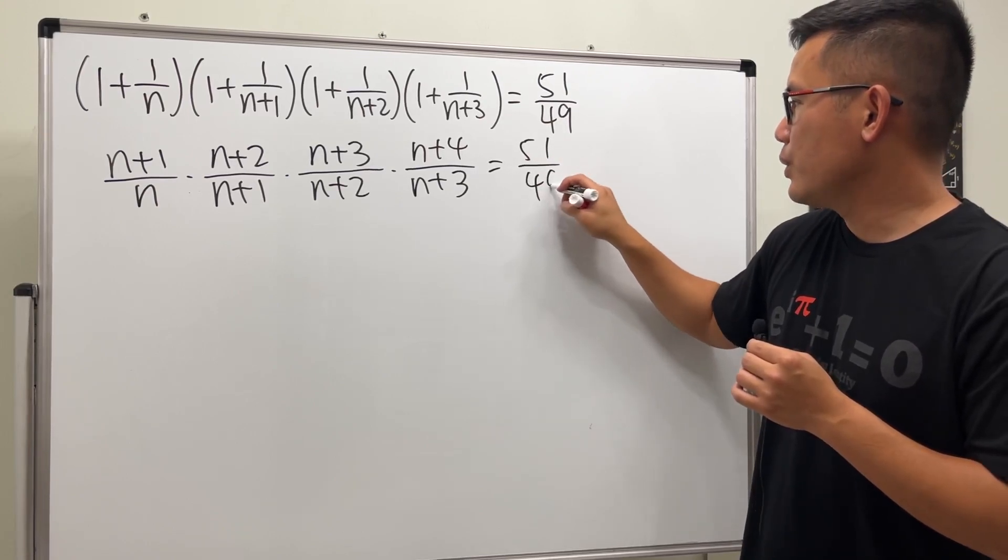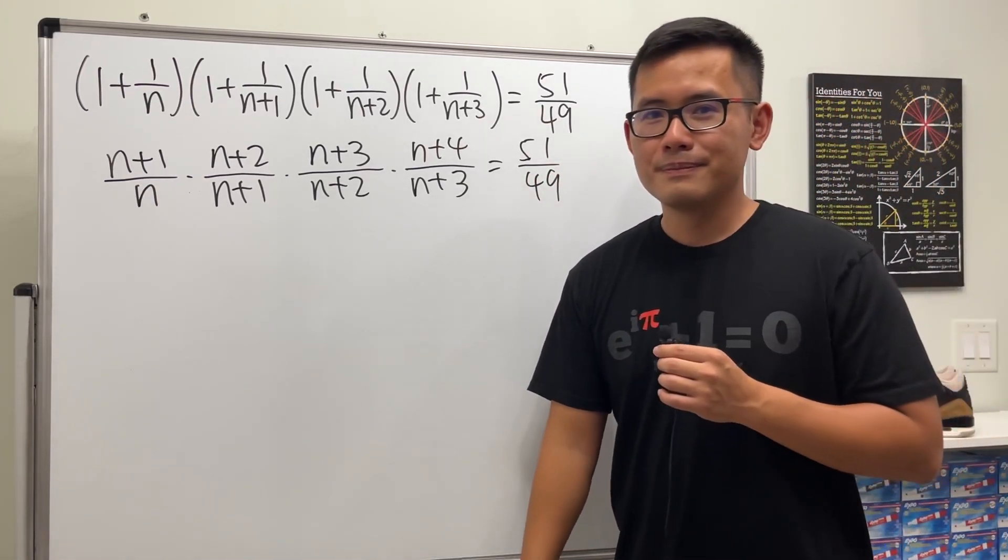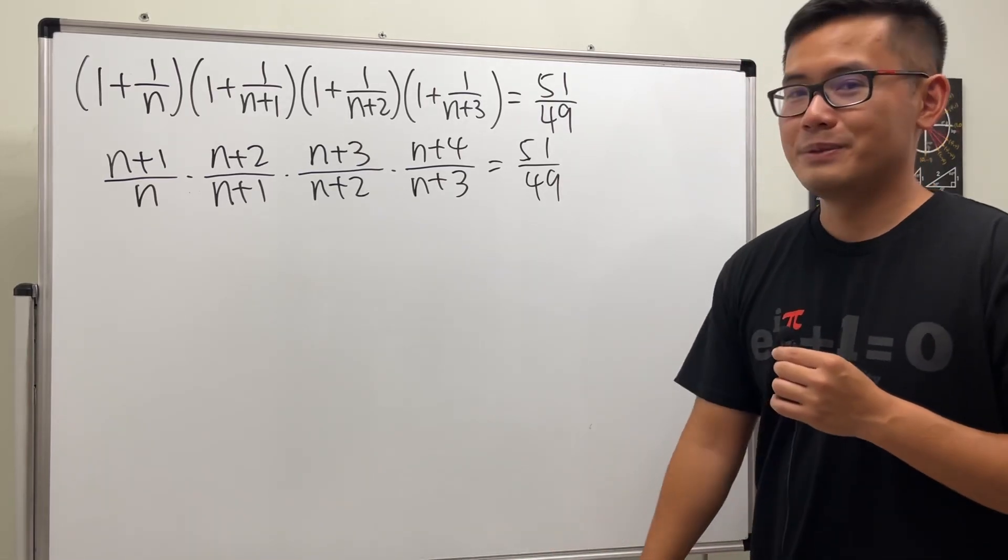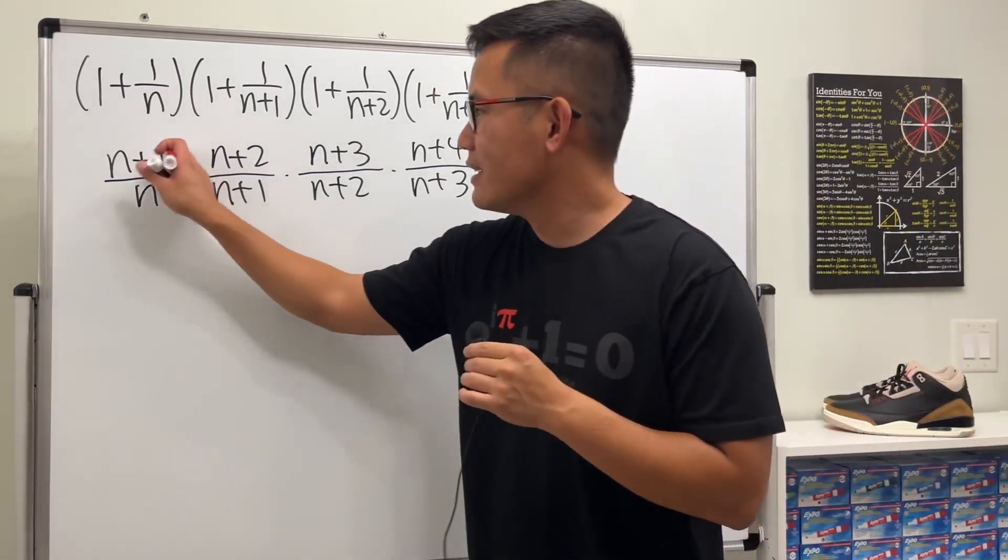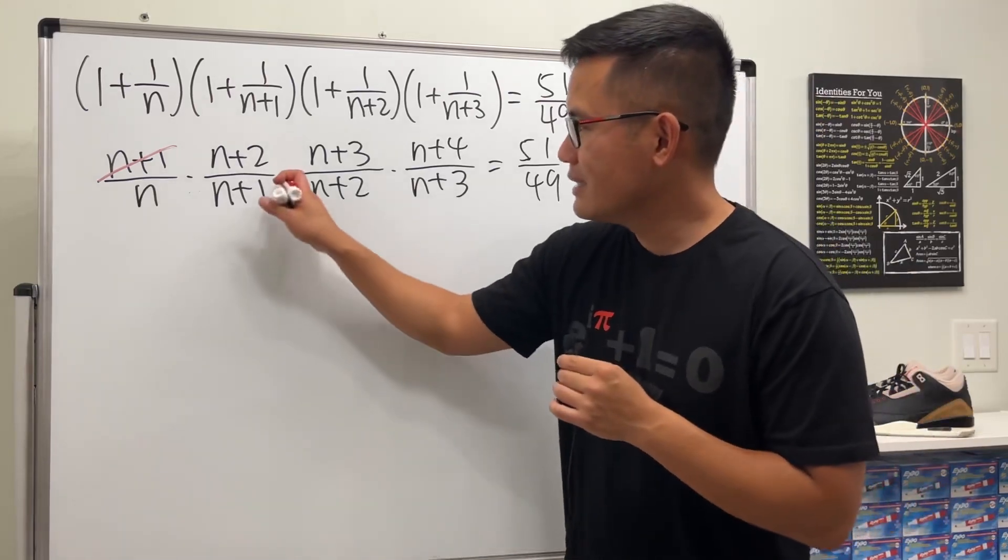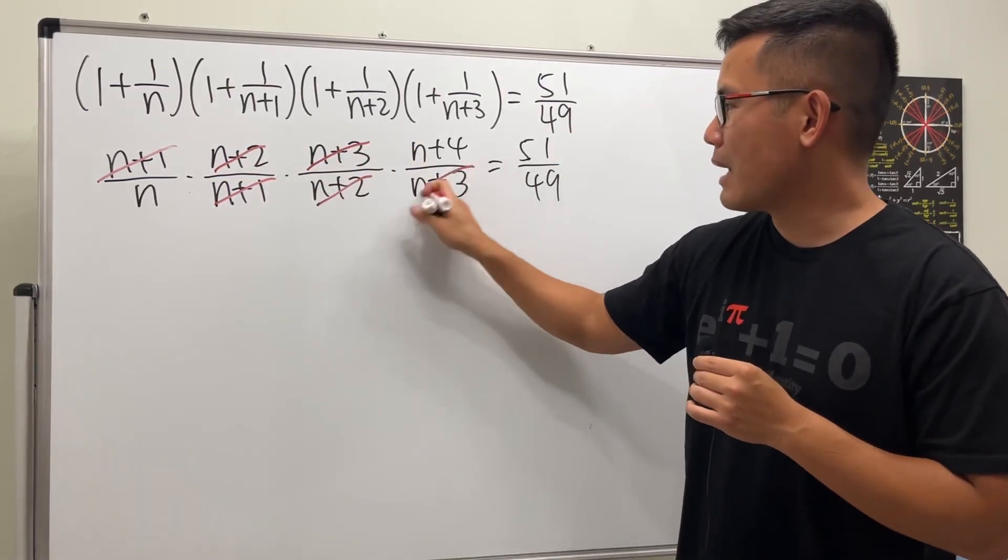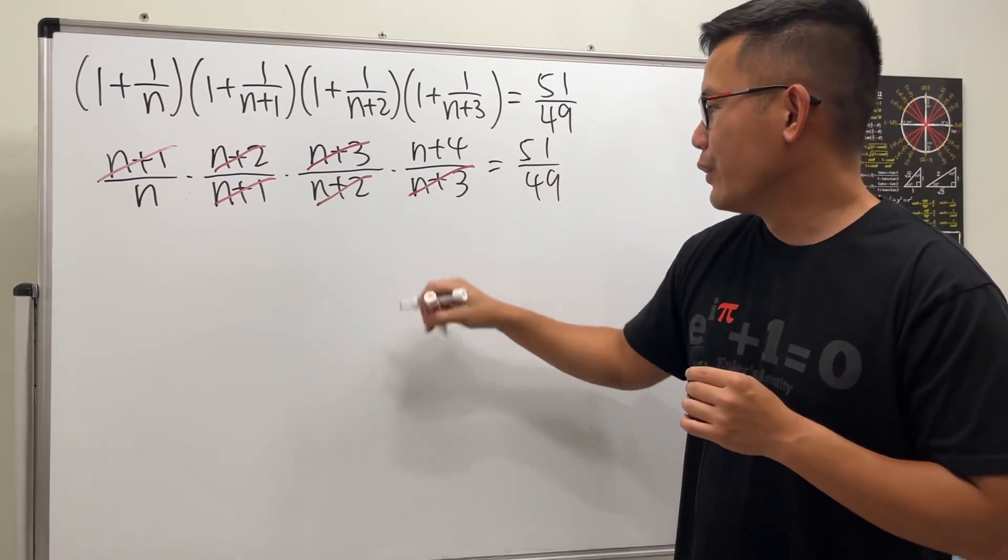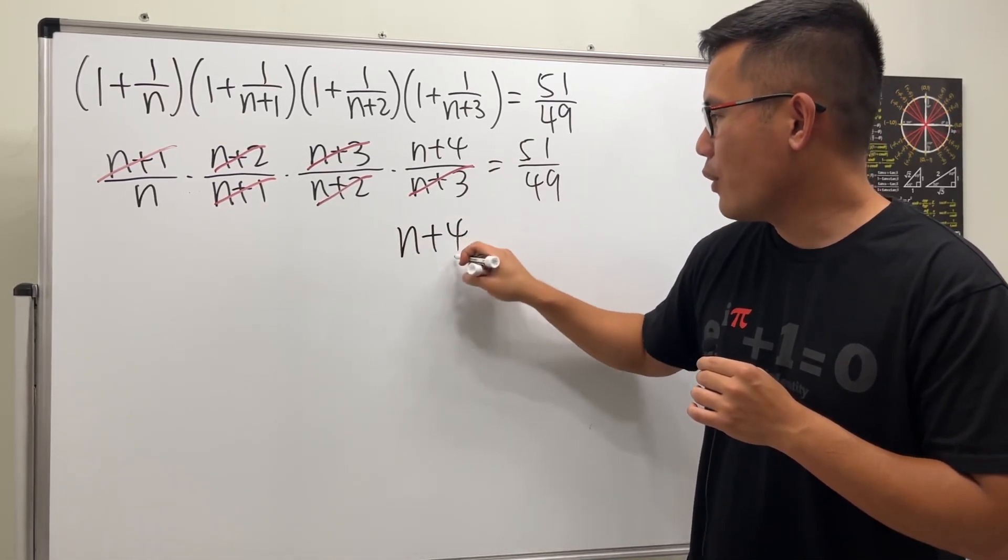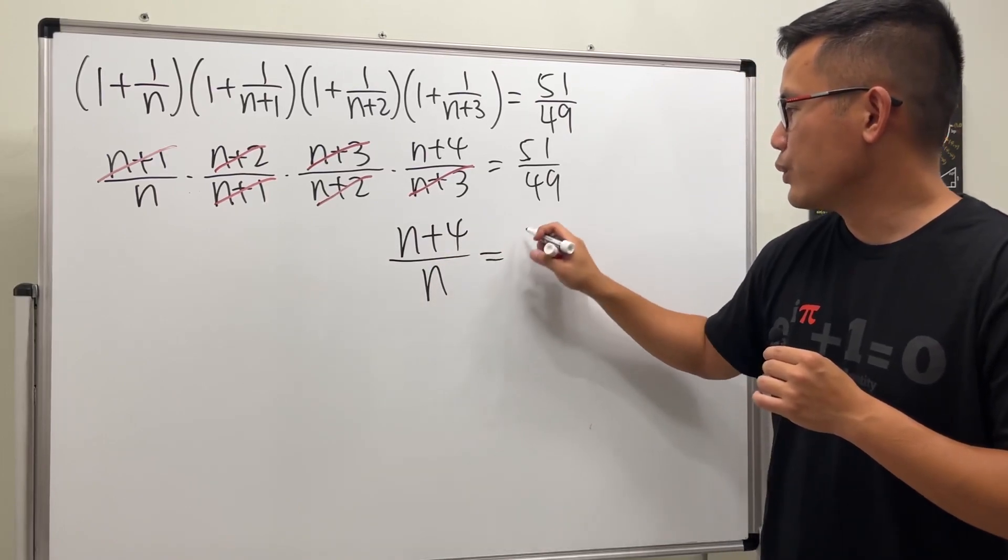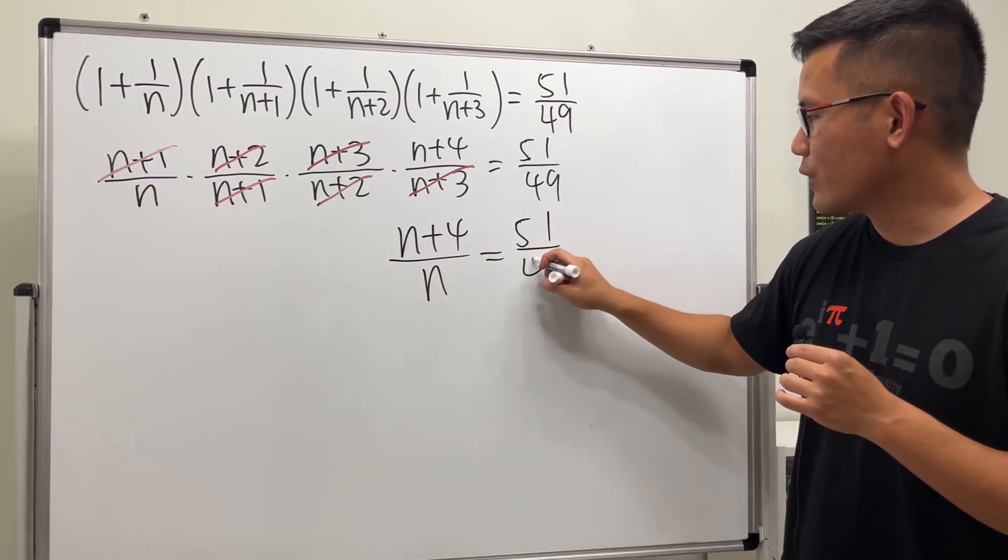Why is this so good? Check it. (n+1) cancels, (n+2) cancels, (n+3) cancels, so all in all we just have (n+4)/n, and this equals 51/49.